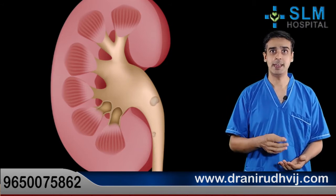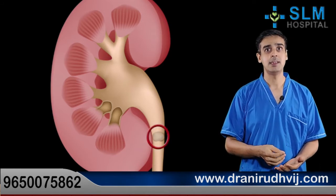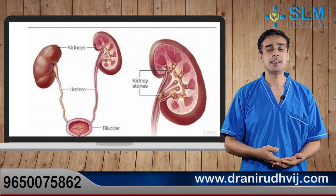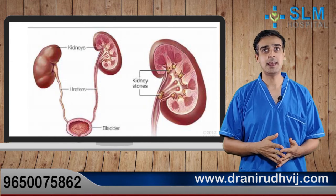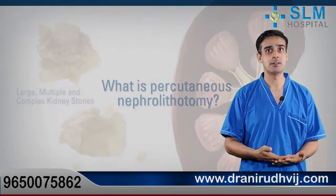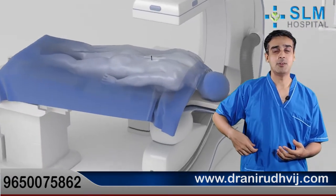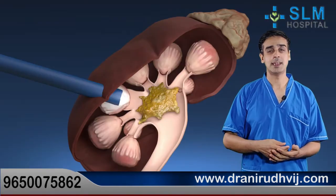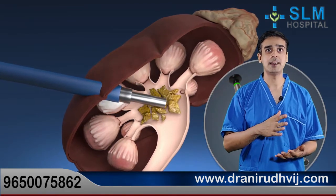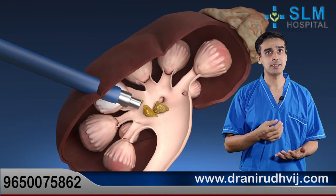When stones attain a larger size — more than 6 to 8 mm — and cause obstruction to the pathway of urine, they require surgical removal. Stones present within the kidney can be removed with a procedure known as PCNL, or percutaneous nephrolithotomy. In this procedure, a small puncture is made in the abdomen overlying the site of the stone, the kidney is directly punctured, and the stone is extracted either in whole or fragmented with a lithotriptor and removed piece by piece.